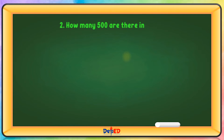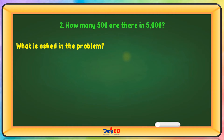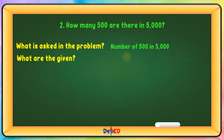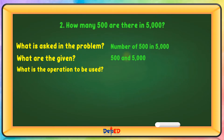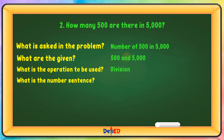How many 500s are there in 5000? What is asked in the problem? Number of 500s in 5000. What are the given? 500 and 5000. What is the operation to be used? Division. What is the number sentence? 5000 divided by 500 equals N. Let us solve: 5000 divided by 500 equals 10.